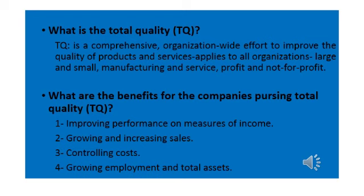This leads us to another question: how do different organizations — different in size, different in sector, different in type of industry — how, despite their differences, think about the same thing? How do all of them think about total quality? So of course, thinking about total quality or pursuing total quality means organizations will attain many benefits.